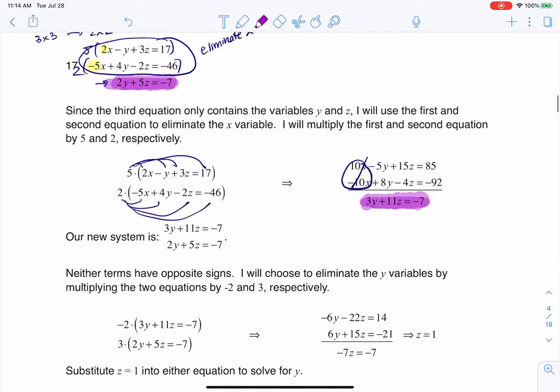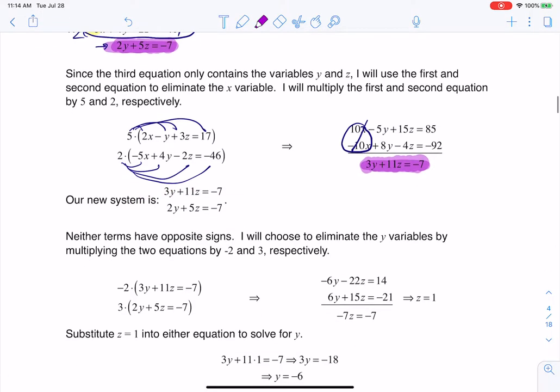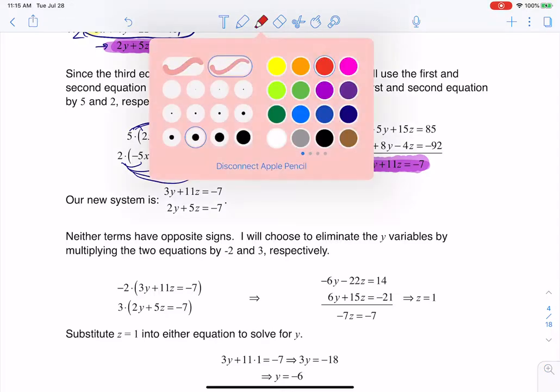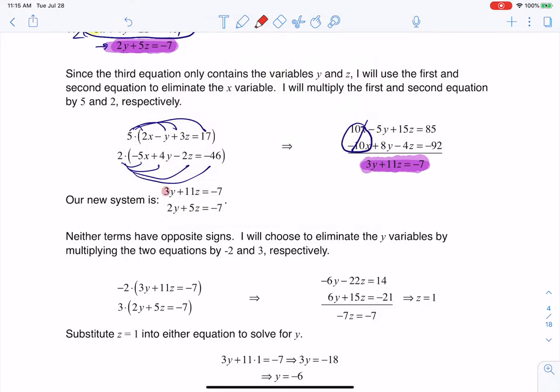At this point, it's your call what letter to eliminate. They all have positive numbers, so none are opposite in sign. I'll opt to eliminate the y's because they have smaller numbers. The coefficients are 3 and 2, both positive, so I'll make one negative. I'll multiply this one by negative 2 and this one by positive 3.